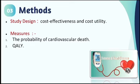Methods contain many components. First, study design: cost-effectiveness and cost-utility. In general, cost-effectiveness uses outcomes in natural units, while in cost-utility the outcome is QALYs or other utilities. In this study, the first measure was the probability of cardiovascular death associated with sulfonylurea or DPP-4 inhibitor combined with Metformin as the main outcome, referring to cost-effectiveness analysis.